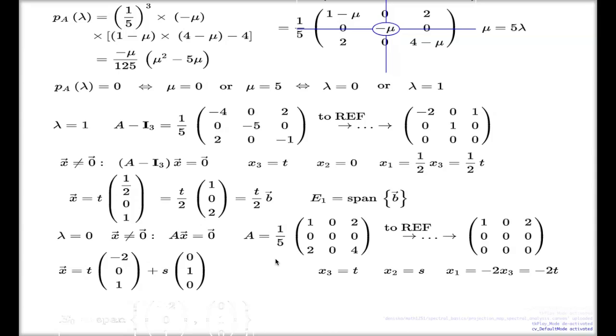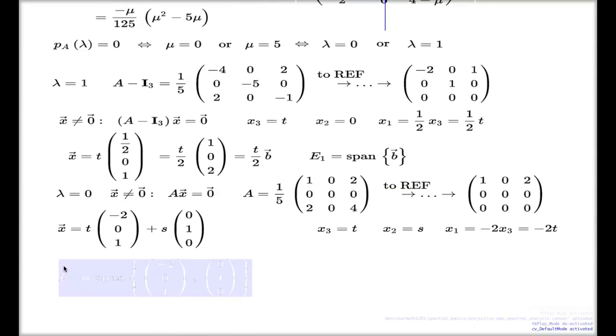So the eigen subspace which is associated with the value 0 now is a span of two vectors. One of them is this one, and the other one is this one. It's a span of the vectors (-2, 0, 1) and the vector (0, 1, 0).